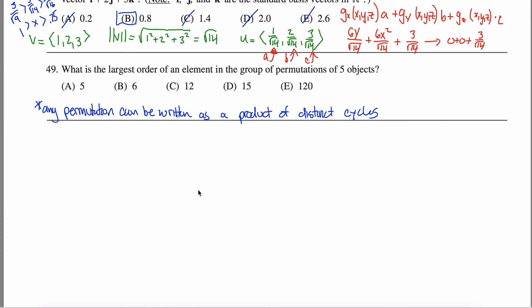Solutions to problem 49 off the GRE subject math practice test — back to group theory. We want to know the largest order of an element. The order of an element is the number of times you need to apply that element to get back to the identity, or equivalently, the power to which you'd have to raise an element to make it equal to the identity.